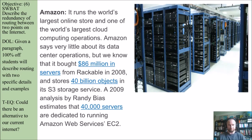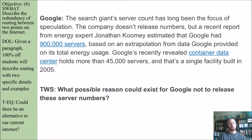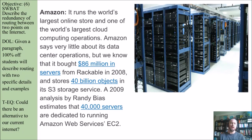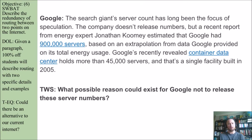There are a lot more companies, but two more I want to touch on. Amazon runs the world's largest online store and one of the world's largest cloud computing operations. Amazon says very little about its data center operations, but we know it bought $86 million in servers from Rackable in 2008 and stores 40 billion objects in its S3 storage service. A 2009 analysis by Randy Bias estimates that 40,000 servers are dedicated to running Amazon Web Services. That's where the hosting comes into play, and Amazon is growing in that field as well.